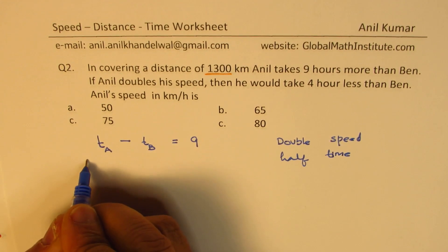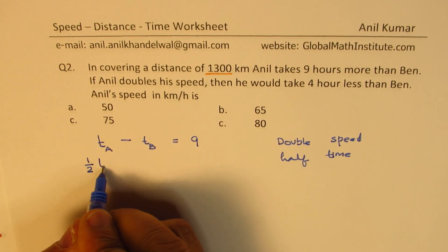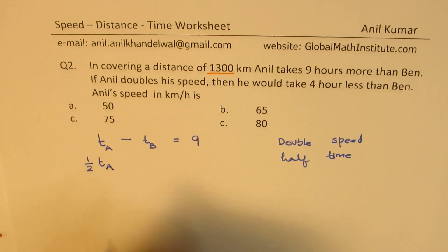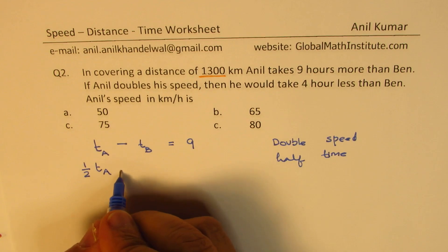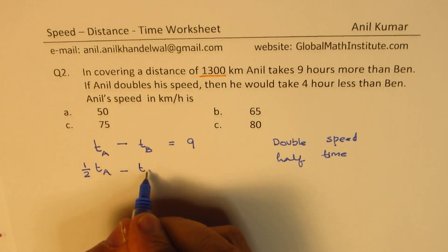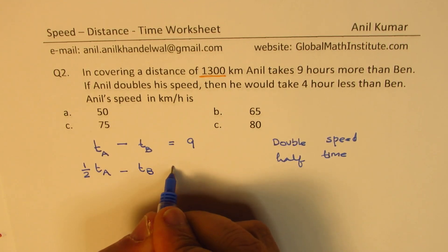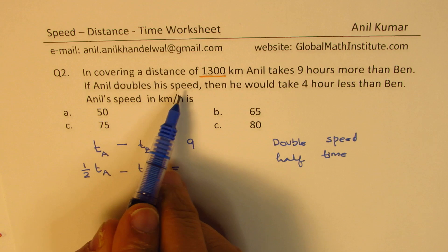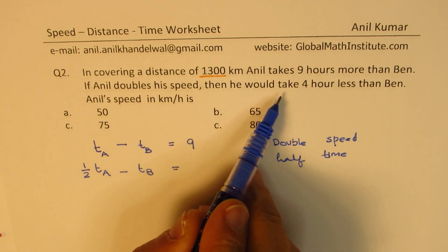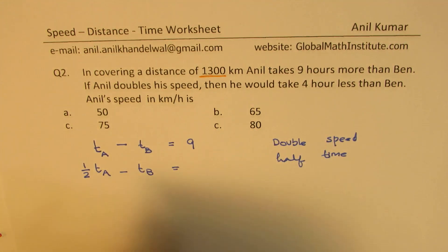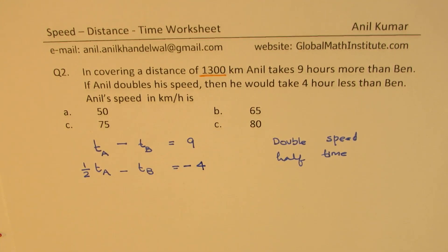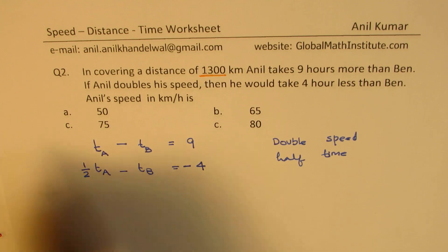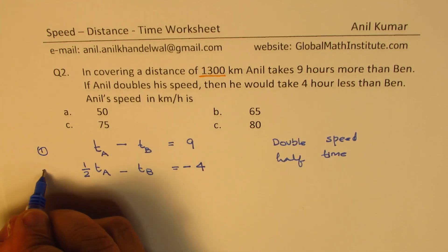Therefore we write half of T_A minus T_B — since Ben is going at the same speed with the same time. If Anil doubles his speed, he would take four hours less than Ben, so half of T_A minus T_B equals minus four. That gives us our two equations, equation one and equation two.